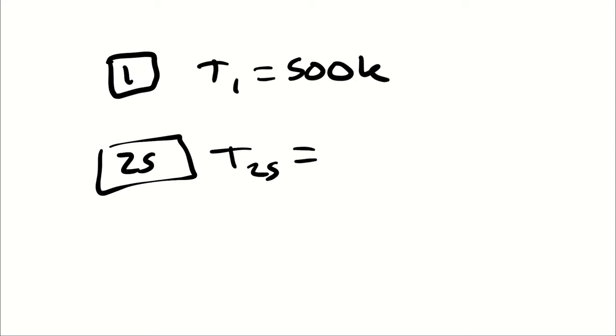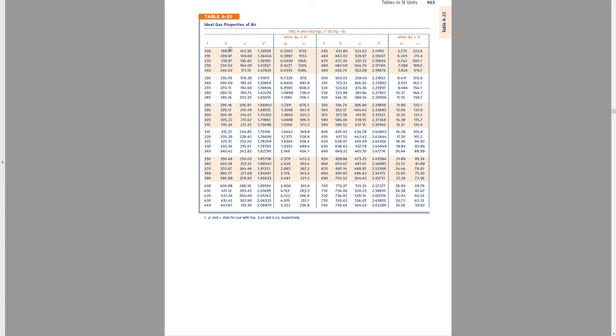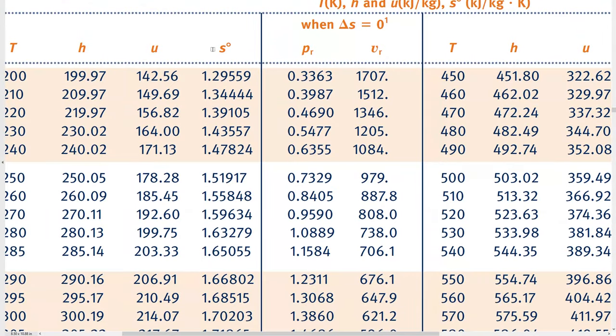Because for my properties for air, on table A22, I do not have entropy. I have this quantity, which is different. This is a zero-point entropy. We are going to be ignoring this column for the time being. Your solution manual will involve this entropy quantity in calculations. I don't want you to do that.